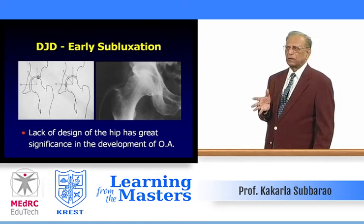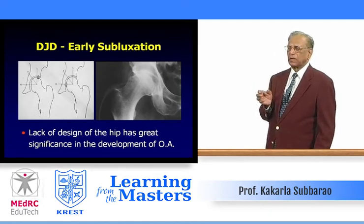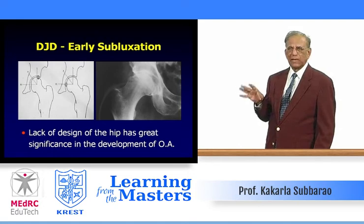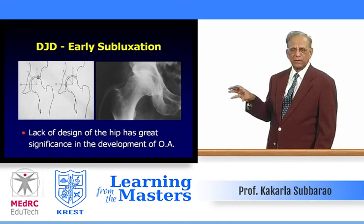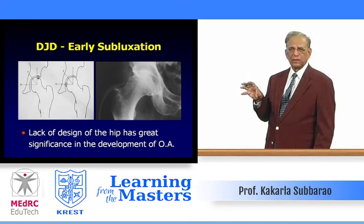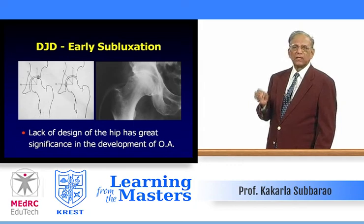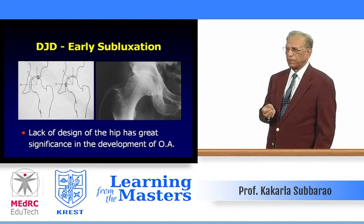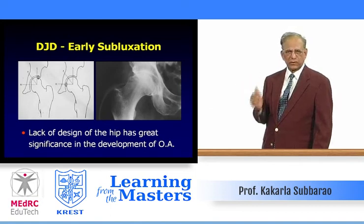In degenerative joint disease or osteoarthritis, subluxation analysis is relevant. There must be some deformity or defect in the design of the hip joint — namely the acetabulum — in order to cause osteoarthritis. While osteoarthritis occurs in weight-bearing joints as the patient gets older, lack of proper hip design has great significance in the development of osteoarthritis, apart from precipitating factors such as minor trauma, weight bearing, and stress.